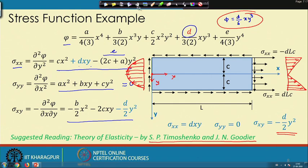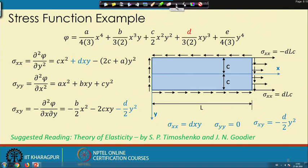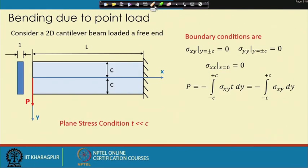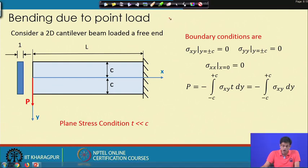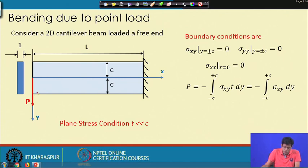Now let us consider a simple beam problem: a cantilever beam loaded with a point load, or essentially a shear force resultant P at the free end. This shear force resultant P acts on the beam, which is fixed at the other end.